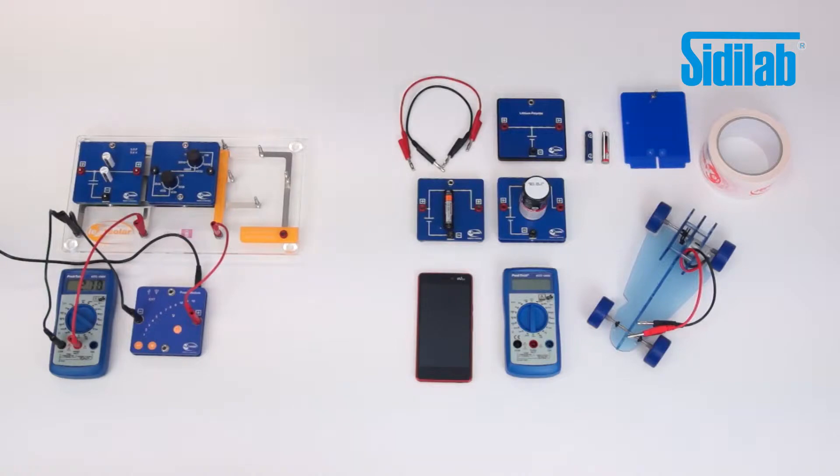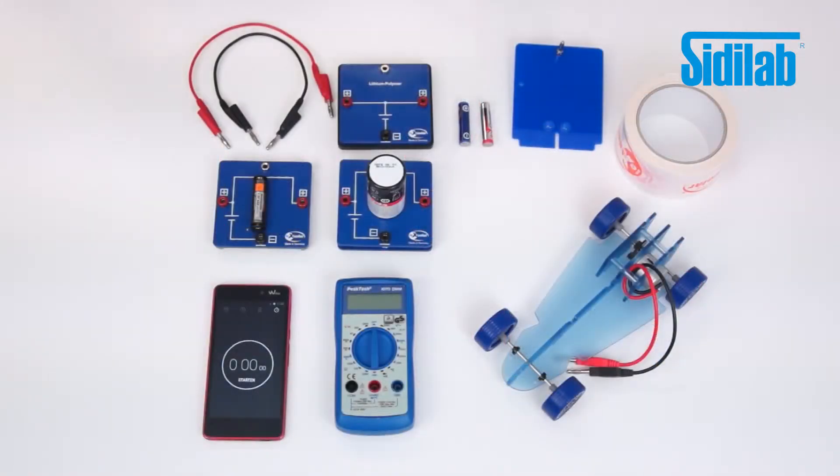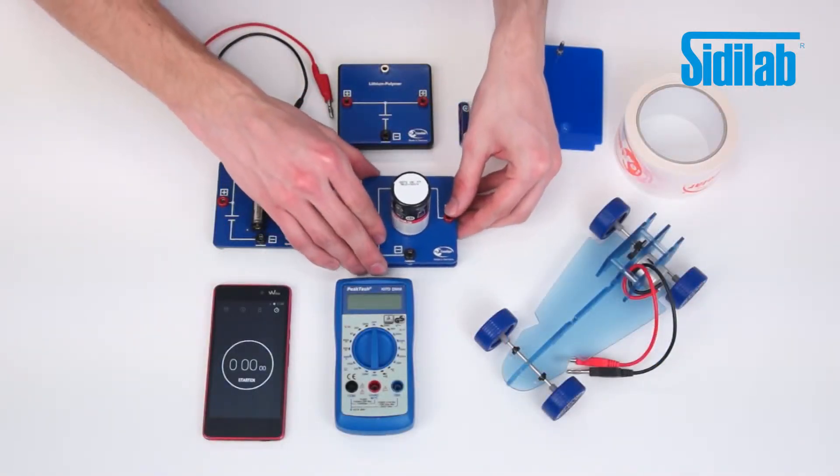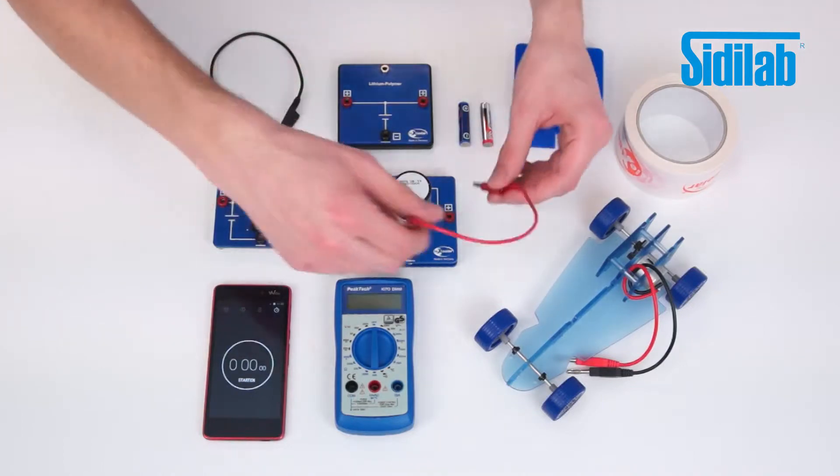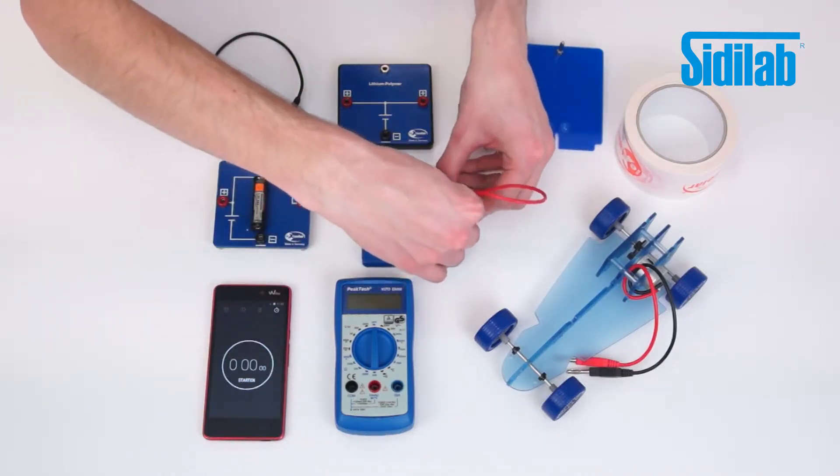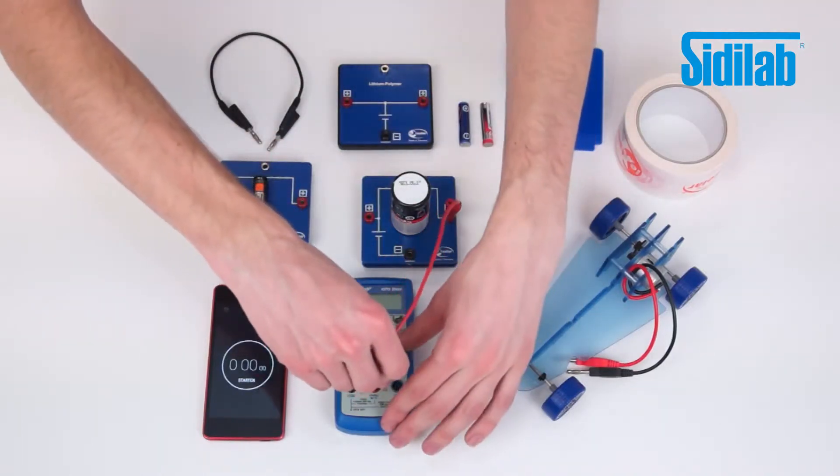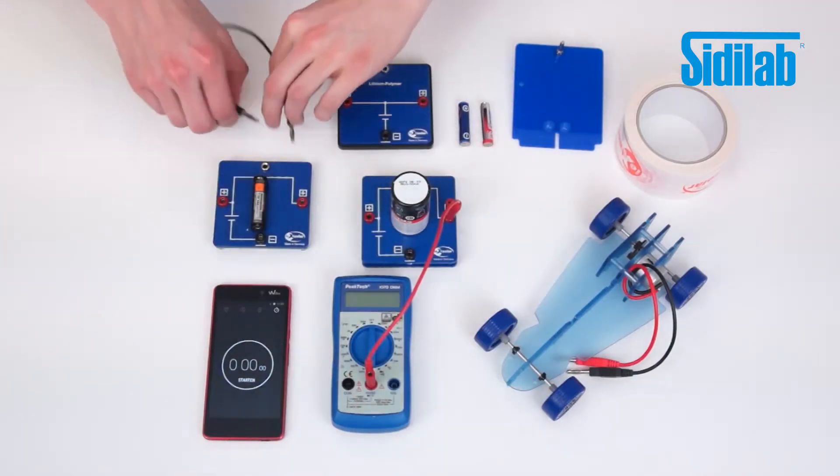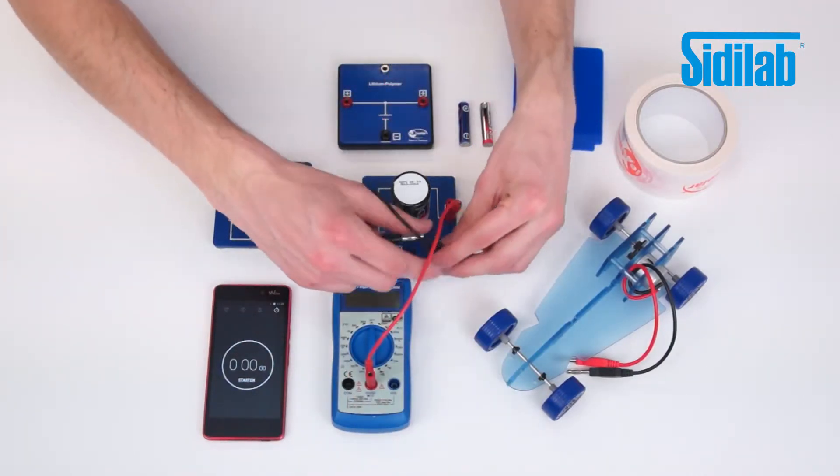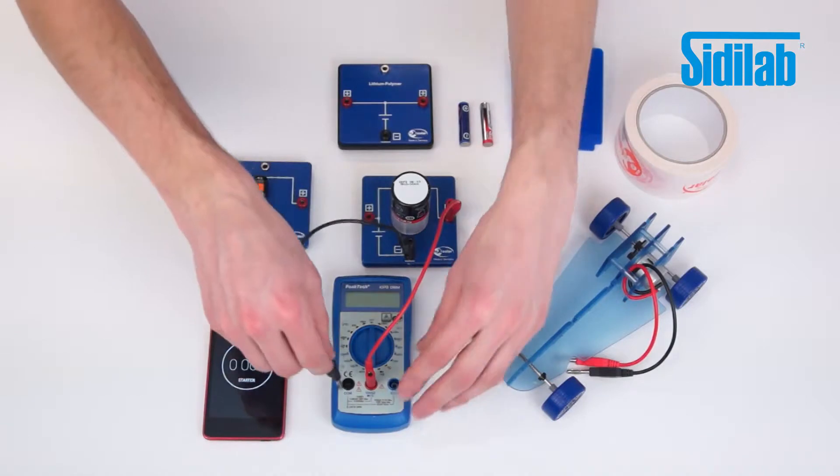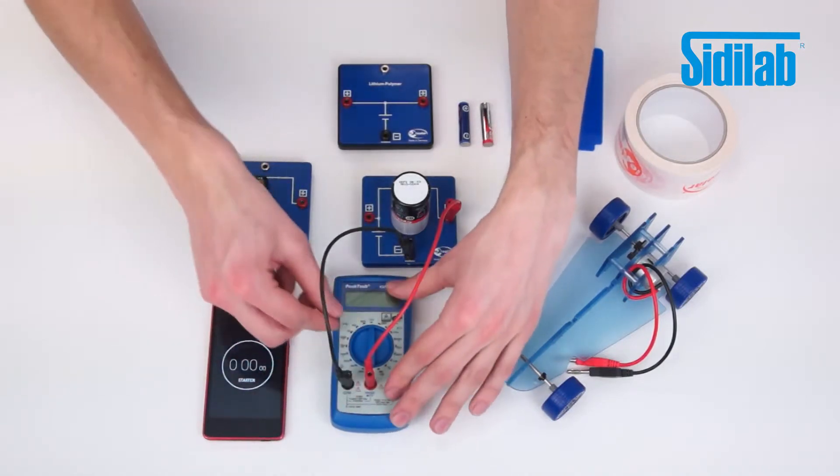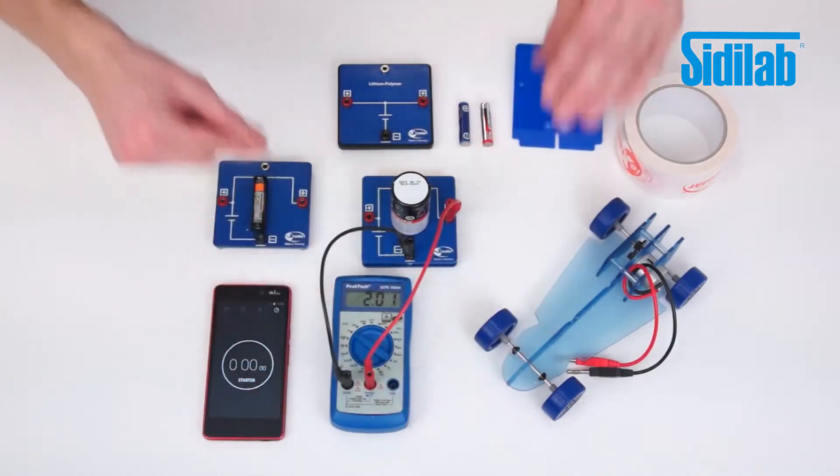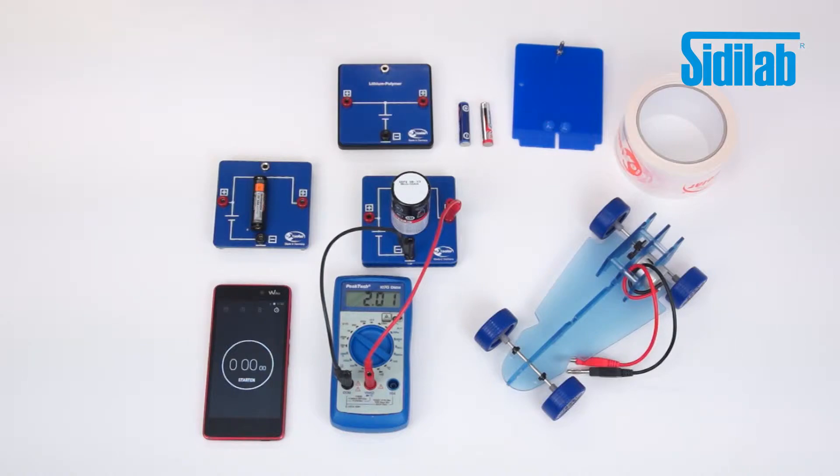While the capacitor is being charged we want to examine the other batteries. To this end we first take the lead battery and determine its open circuit voltage with the second multimeter. It amounts to 2.01 volts.